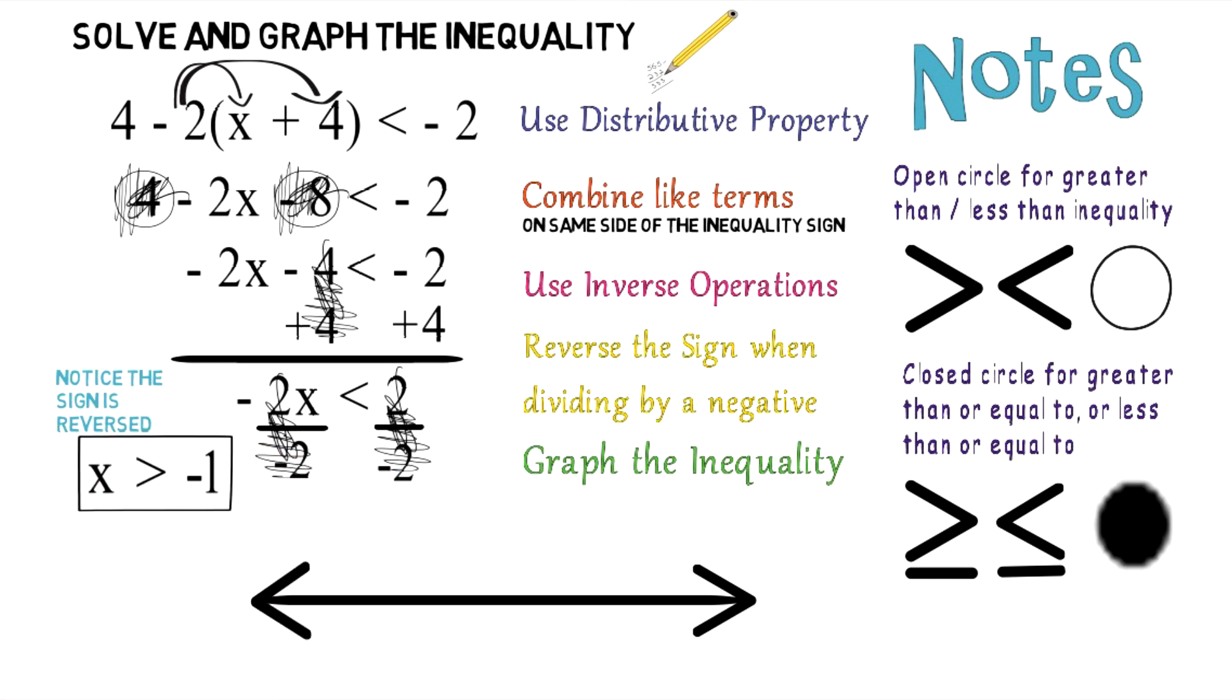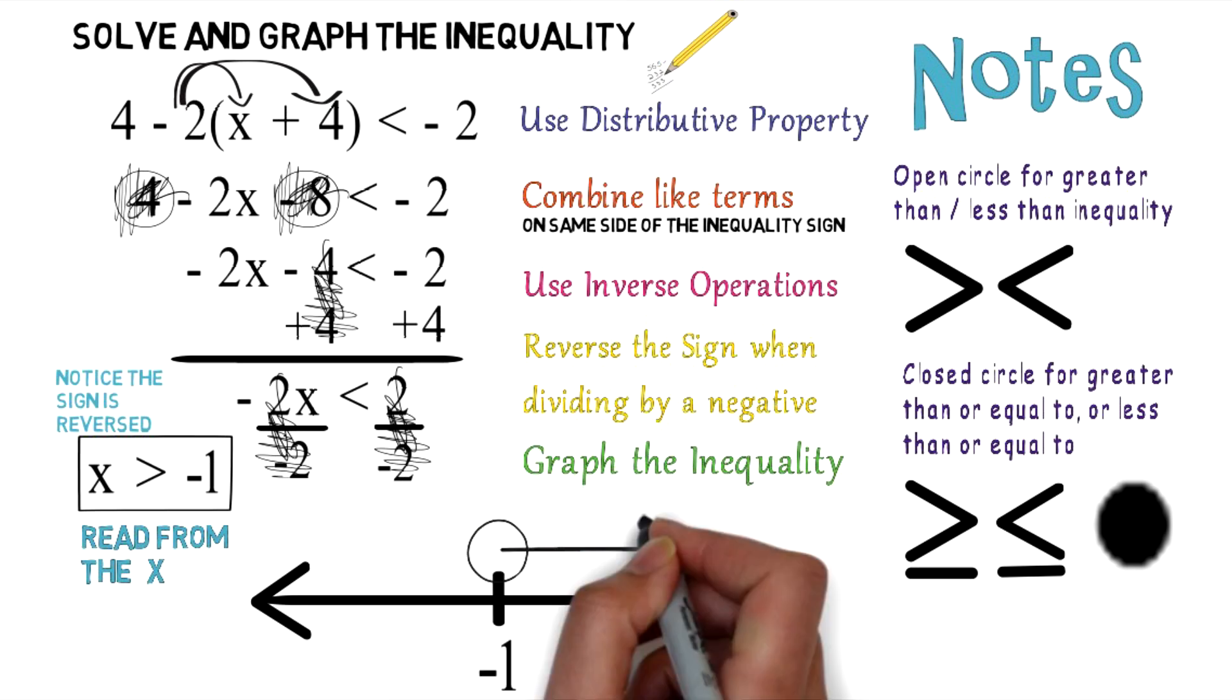It's x is greater than negative 1. Always read from the x. That's why it's x is greater than negative 1. So we'll plot negative 1 on a number line, use an open circle, and greater than is to the right.